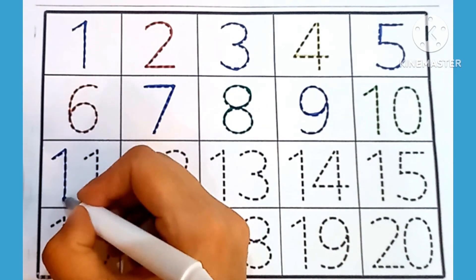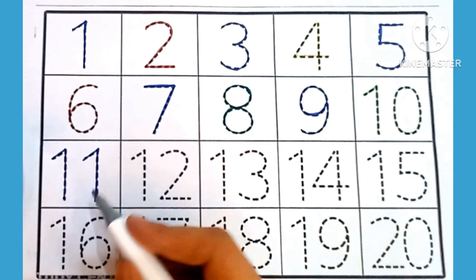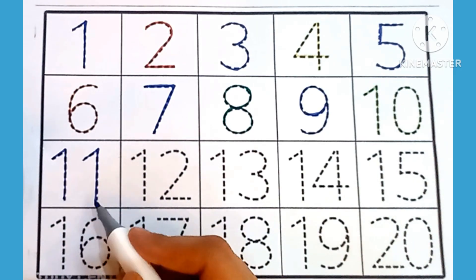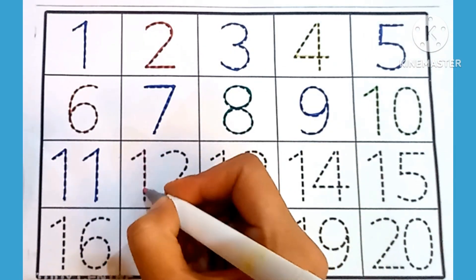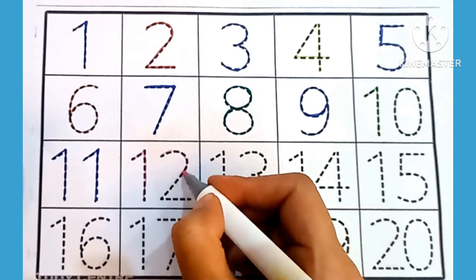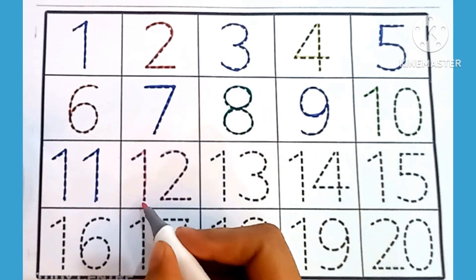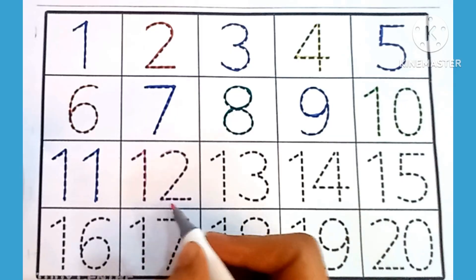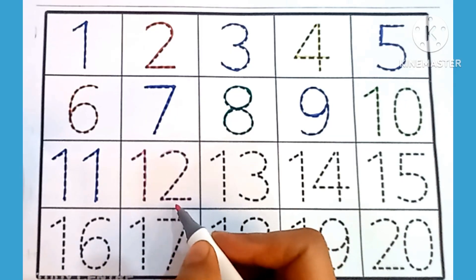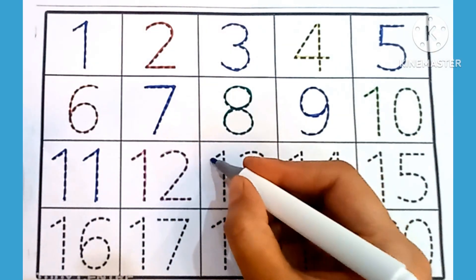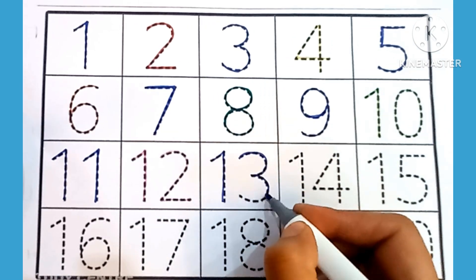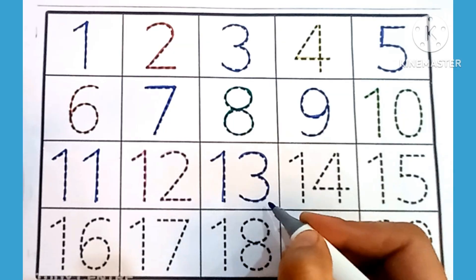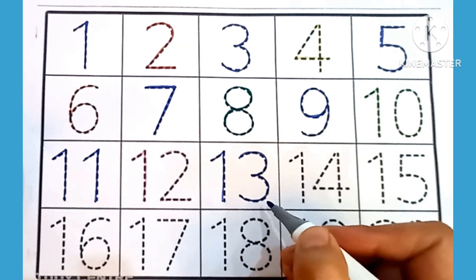Eleven: one, one — which is this number? Eleven. Twelve: one, two — which is this number? Twelve. Thirteen: one, three — which is this number? Thirteen.